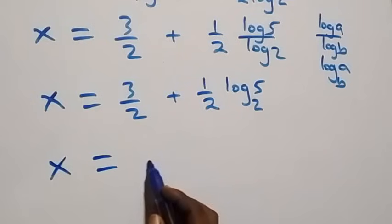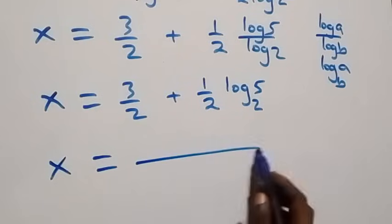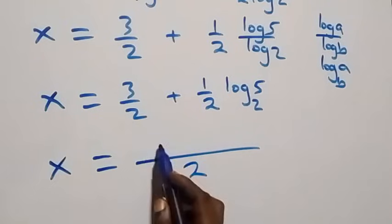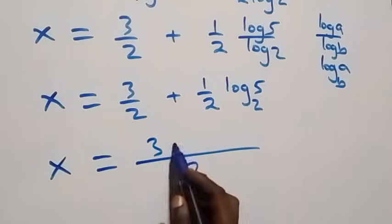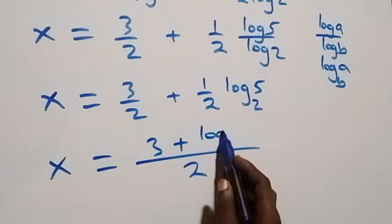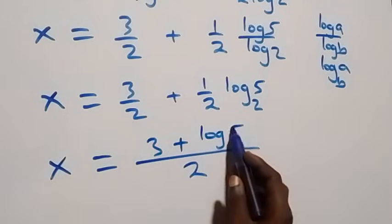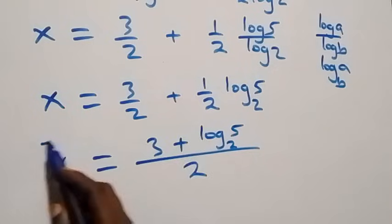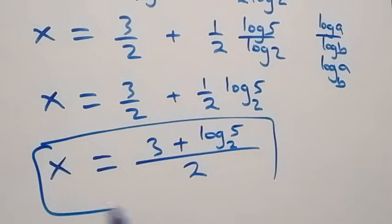So we are left with log base 2 of 5 here. What we have becomes x equals to 3 plus log base 2 of 5, all over 2.